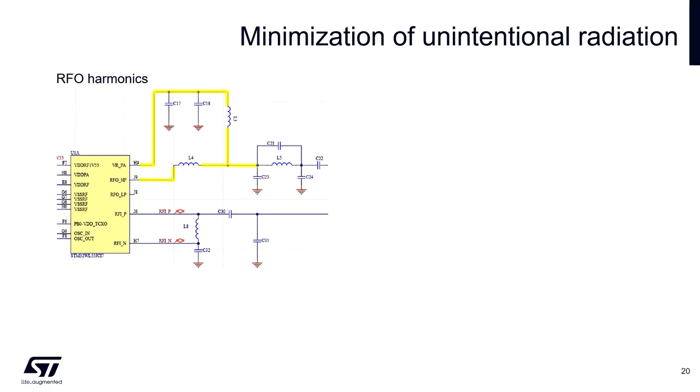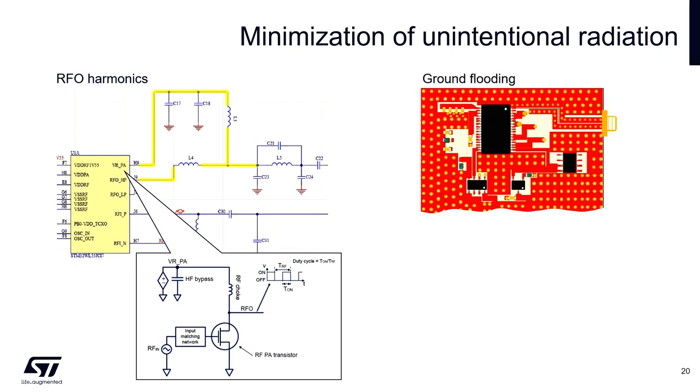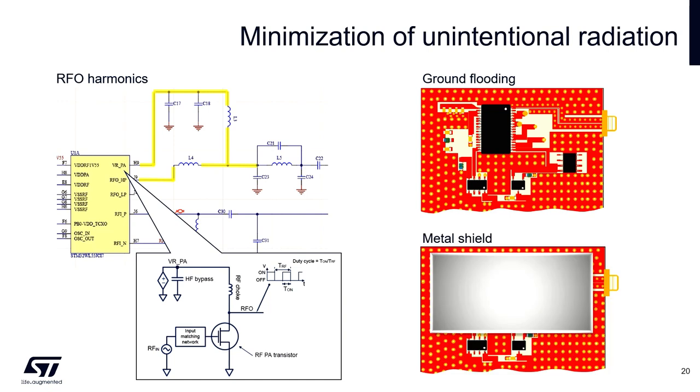To minimize the unintentional radiation, more attention should be paid to the RF output part, where the signal intensity is high and the spectral content of the signal is rich. Equivalent circuit of the power amplifier output stage is shown here. To minimize the unintentional radiation, it's recommended to flood the ground plane and stitch it with another ground layer by vias. If there are another sensitive technologies implemented around, the metal shield box can also help.